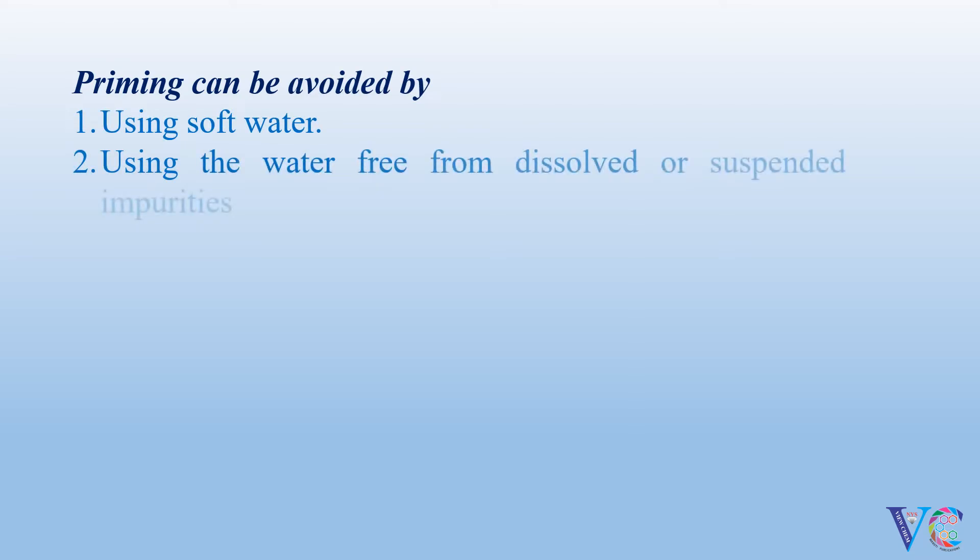Priming can be avoided by using soft water, using water free from dissolved or suspended impurities, using a boiler of proper design, avoiding sudden rise in temperature.